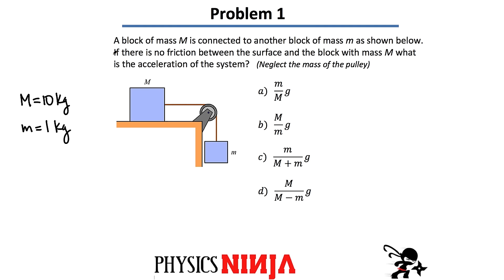Here's problem one — a standard problem. We have a block of big M connected to another of little m. We're going to neglect any friction between the surface and the block, which simplifies things a lot. They ask: what is the acceleration of the system? You imagine you set this up and release it from rest. If there's no friction, the big block will probably accelerate to the right and the little block will accelerate downward.